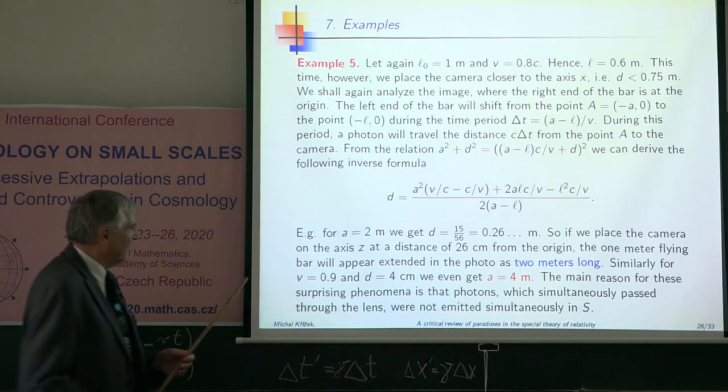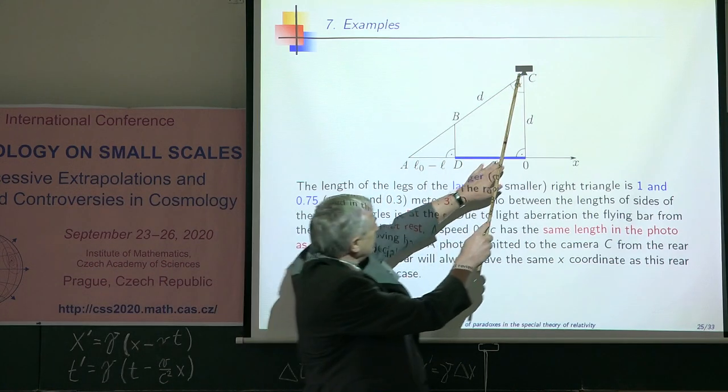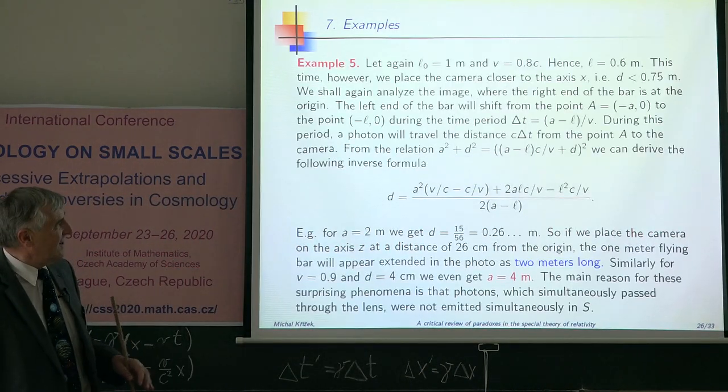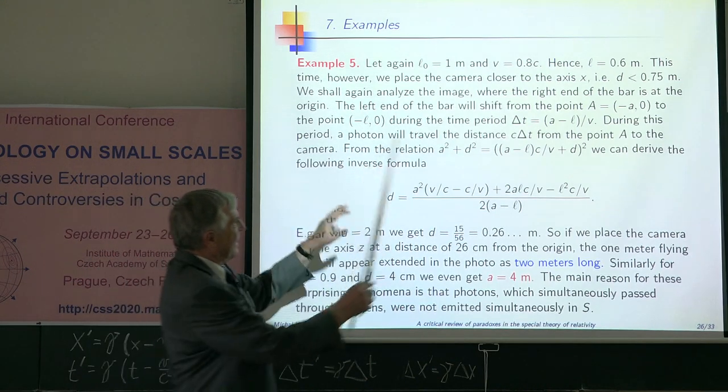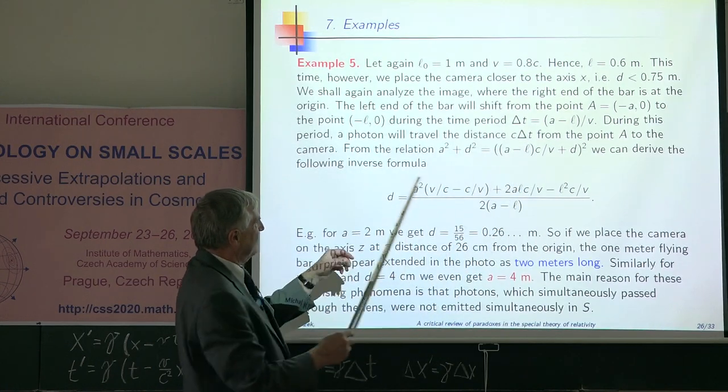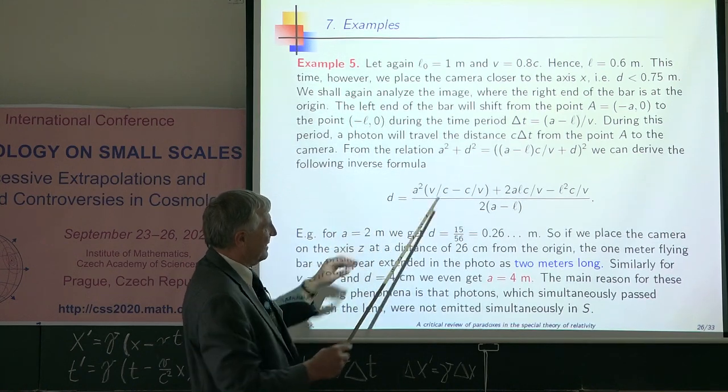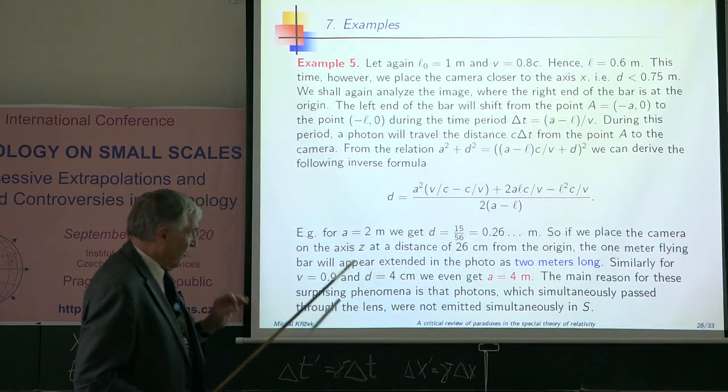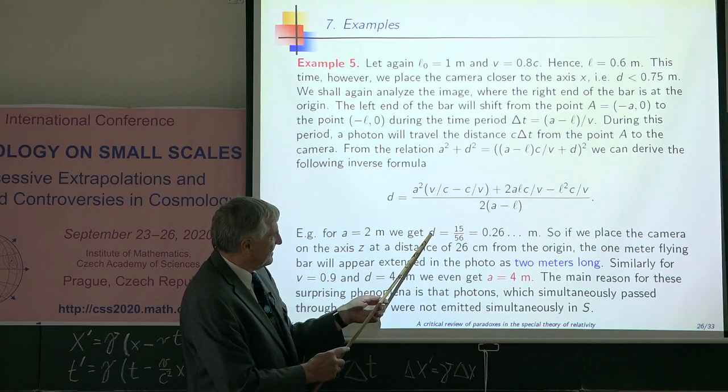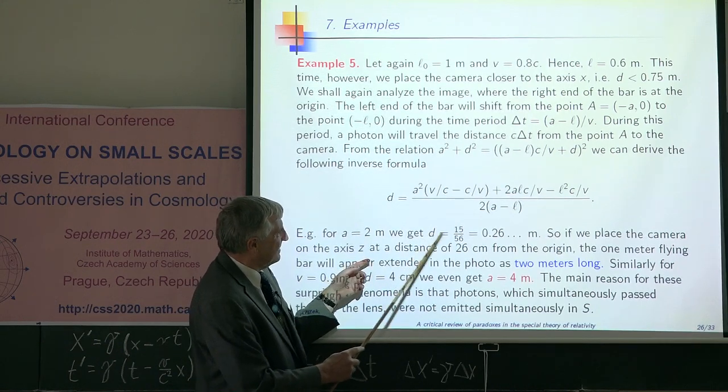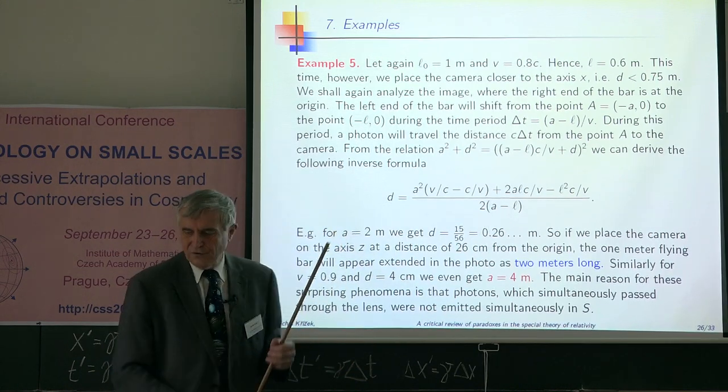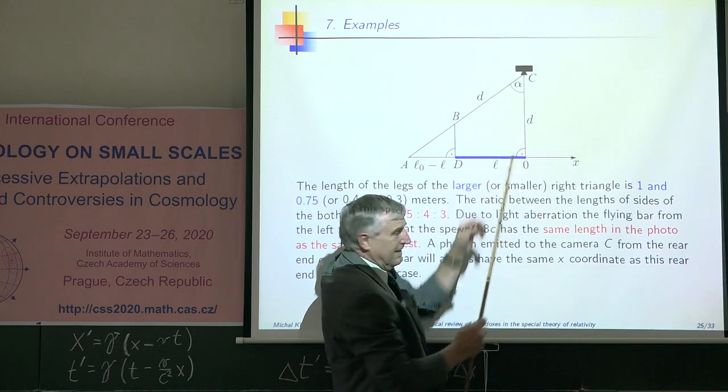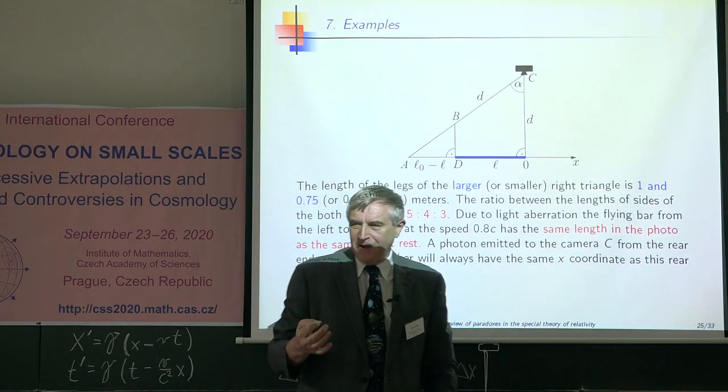Now we will move this camera closer to this axis. If you put it closer to this axis, you can again use Pythagorean theorem. You will end up with formula for D which is expressed by the length of this original bar. It is possible to find that in this case, this D is, if it is 26 centimeters, then you will see on your camera the bar which has 2 meters. If this camera will be here approximately, then 1 meter bar on photograph will have 2 meters. So it is longer.